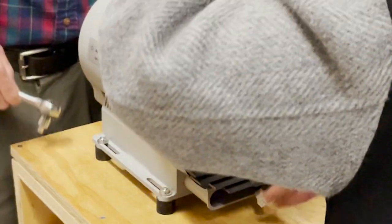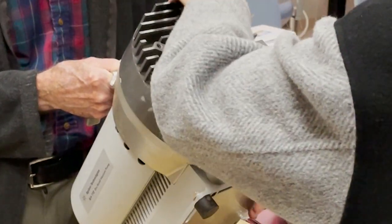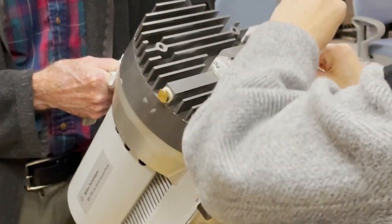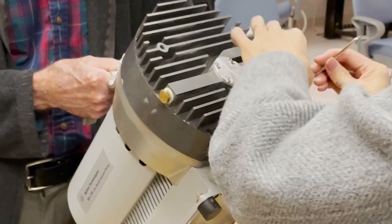And these are on fairly tight. They are put on with a torque wrench, so you may have to take that Allen key and loosen it to get it out.